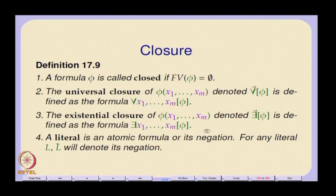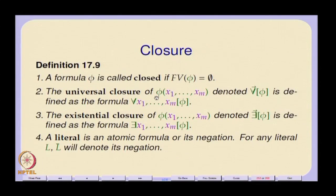To make things explicit, we also define a universal closure operation: take all the free variables in the formula and put a universal quantifier or an existential quantifier in front to get the universal or existential closure. Universal and existential closure formulas are important, and closed formulas in general are important. The notation phi of x1 to xm implicitly says that the set of free variables is entirely contained in the set {x1, ..., xm}.